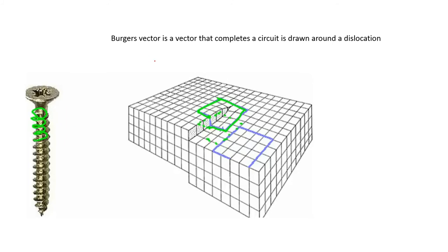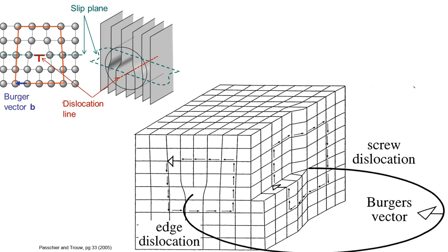As mentioned here, the Burger's vector is the vector that completes a circuit drawn around a dislocation. Edge dislocation is shown here also schematically in another presentation. You see this half plane, which is inserted between these planes of atoms, so this is a normal view, and the Burger's vector here. You see another edge dislocation here, shown in the 3D format, and this is screw dislocation shown here.